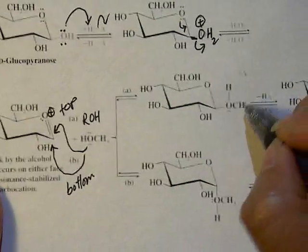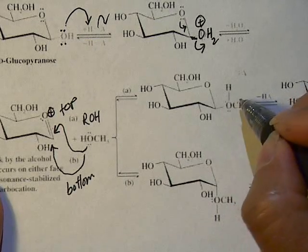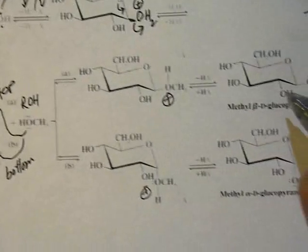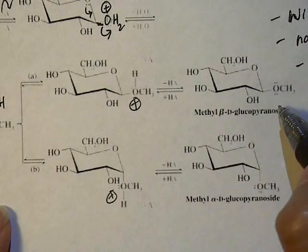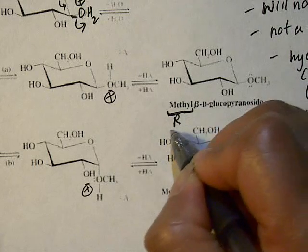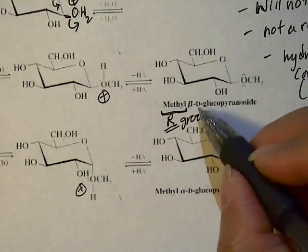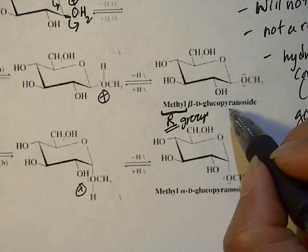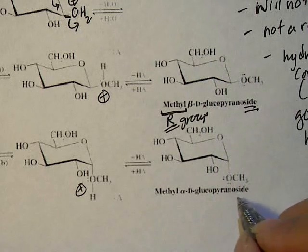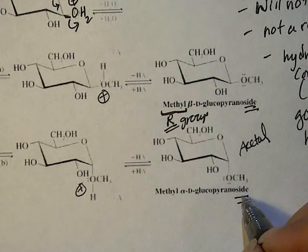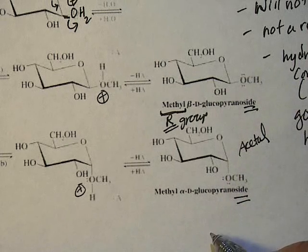If the alcohol attacks from the top, it ends up in the equatorial position; if from the bottom, it ends up in the axial position. The oxygen carries a positive charge, which is then removed by deprotonation to regenerate the acid catalyst. The resulting products are named based on the R group of the glycoside. For example, with methyl as the R group: if CH₂OH and OCH₃ are on the same side, it's methyl beta-D-glucopyranoside; the other isomer is methyl alpha-D-glucopyranoside. You get a mixture of these two acetals from the reaction.